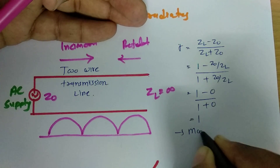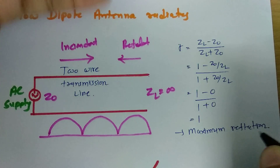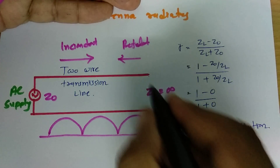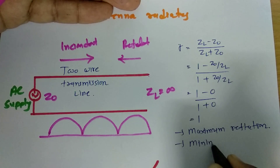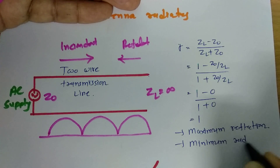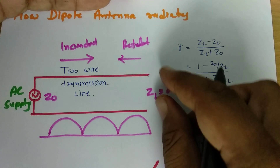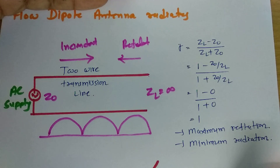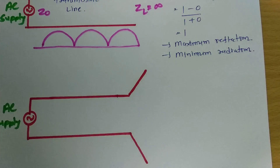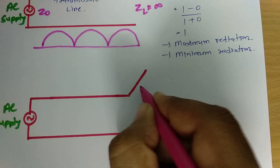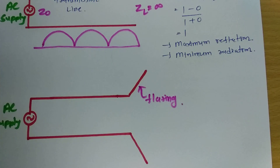So here maximum reflection is happening. If reflection is maximum, radiation will be minimum. This is what happens with an open-ended transmission line. Now, what I am doing is providing a little flaring to the two wires.